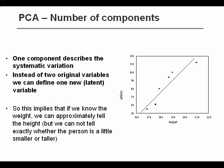This means that in the future, if we know the weight well, then we would also approximately know the height. But we cannot tell exactly whether a person is a little bit taller or smaller from the weight — there's not enough information here. And that's why we only need one component in this case, and probably cannot justify two components.